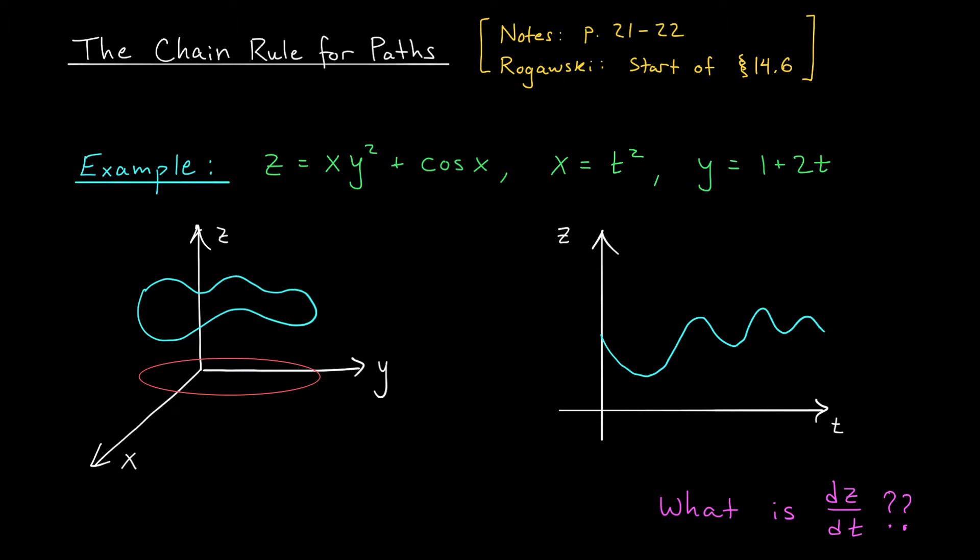From our lessons on parametric equations, we know we can think of t like time, right? And as time passes, we can imagine a little bug walking around the xy plane, tracing out some curve as it moves. Its coordinates at time t are given by x and y. So let's suppose that in this example, our little bug traces out this elliptical curve that you see here.